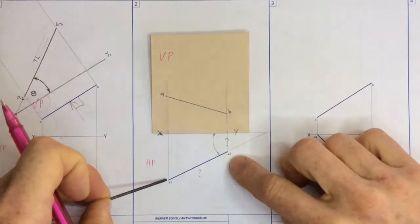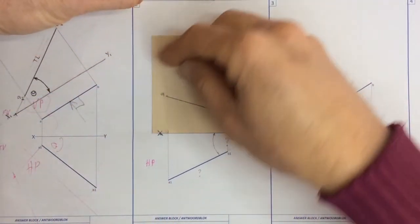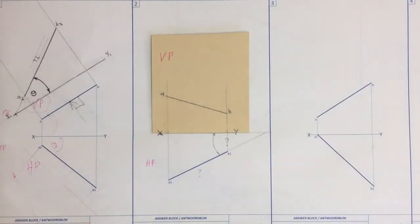So if I'm wanting the true inclination to the vertical plane, I must be using those measurements on an XY-axis, which I'm going to develop over here.